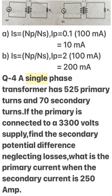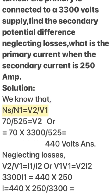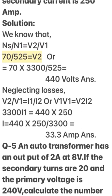Q4: A single-phase transformer has 525 primary turns and 70 secondary turns. If the primary is connected to a 3300 V supply, find the secondary potential difference (neglecting losses). What is the primary current when the secondary current is 250 A? Solution: N2/N1 = V2/V1 → 70/525 = V2/3300 → V2 = 70 × 3300 / 525 = 440 V. Neglecting losses: V1×I1 = V2×I2 → I1 = 440 × 250 / 3300 = 33.3 A.